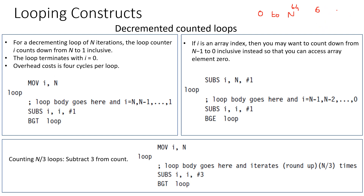You don't have to worry when writing a C program because the compiler takes care of this, but it really makes a difference in assembly. The first variety is a decremented loop from n down to 1, inclusive of both. The loop terminates with i equals 0. Implementation: move n into i, execute the loop body, subtract 1 from i, and if i is greater than zero branch back, otherwise exit. The overhead cost is one cycle for subtract plus three for branch — four cycles total.